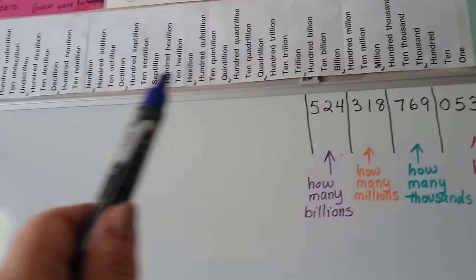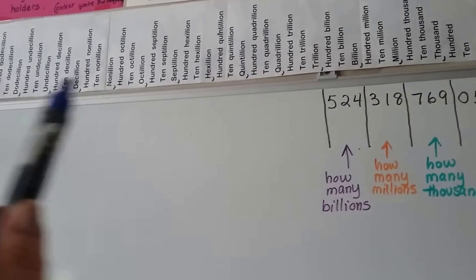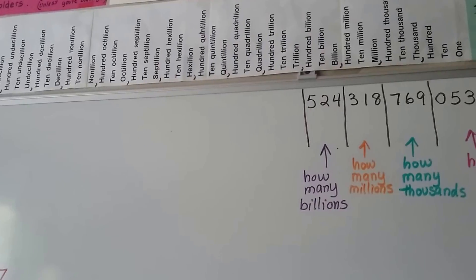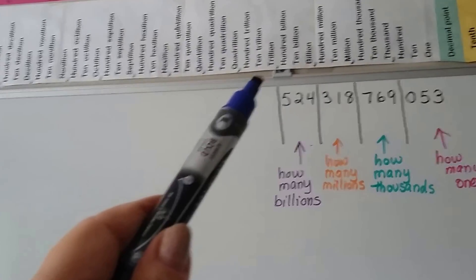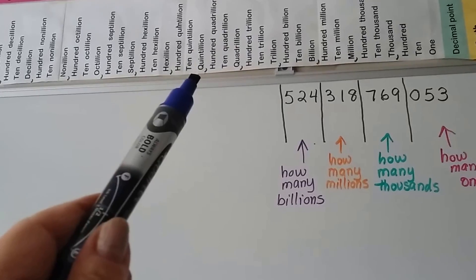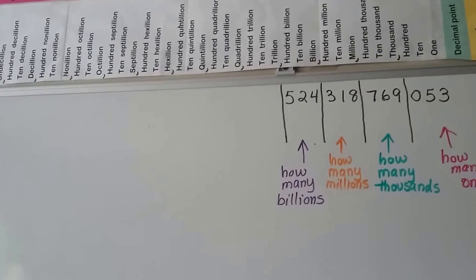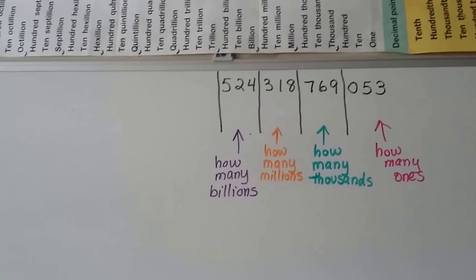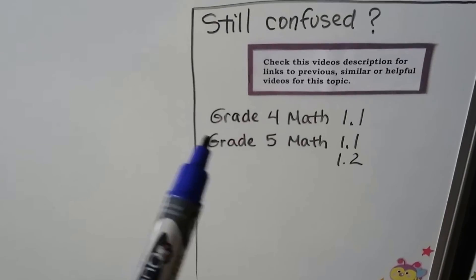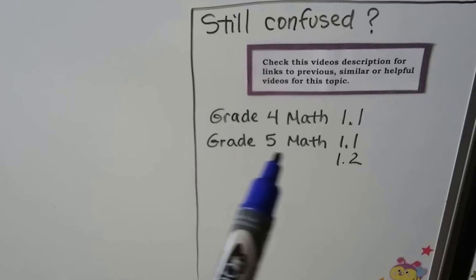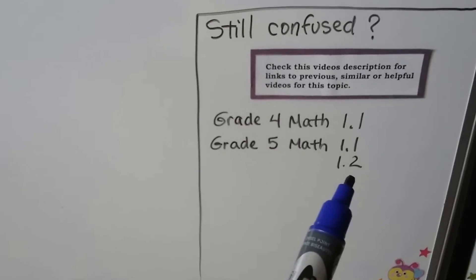You can go online and see all the different place values. After billion is trillion, after trillion is quadrillion, then quintillion, then hexillion — it just keeps going. There are going to be links in this video's description to grade 4 math 1.1 and grade 5 math 1.1 and 1.2 for extra help.